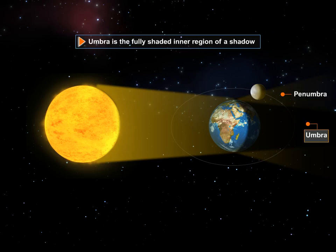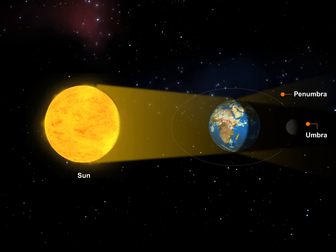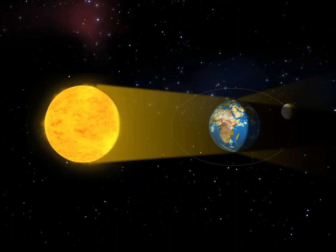A lunar eclipse takes place only if the sun, the moon, and the earth are in a straight line. Lunar eclipse occurs only on a full moon day.